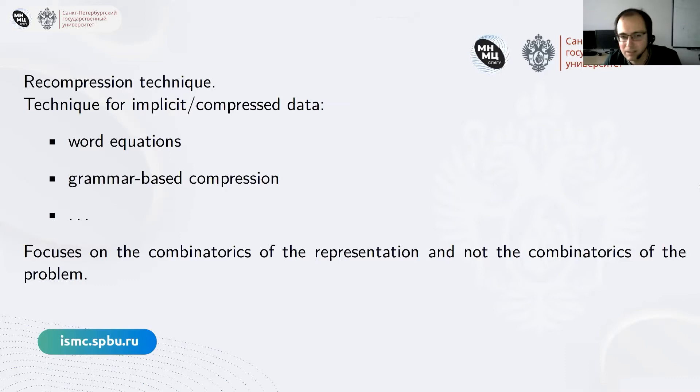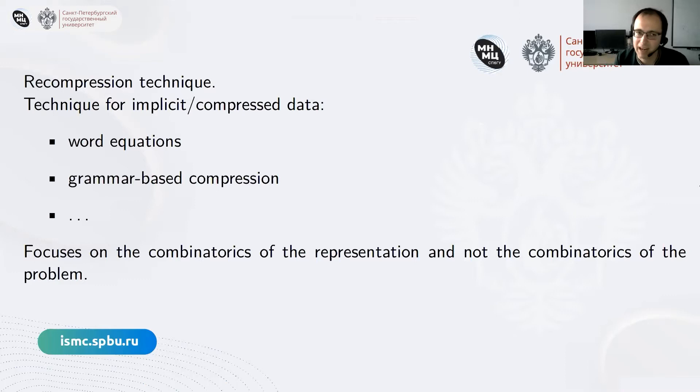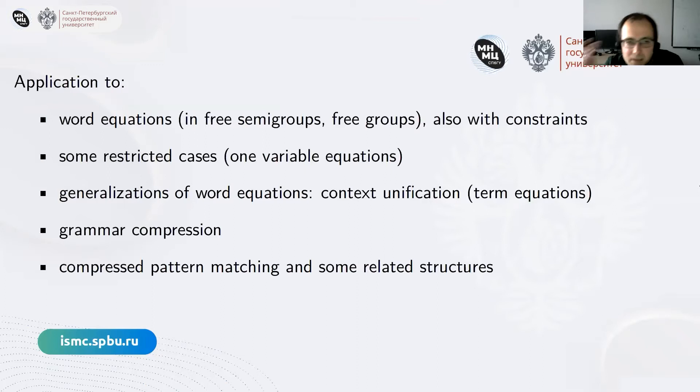What we focus on in this compression technique is not the combinatorial properties of the data itself, but rather the combinatorial properties of the way they are defined — the way those word equations are written or the way those formal grammars are defined. Not on the actual combinatorial object (words or trees), but on the way they are represented. It turns out this is quite fruitful and led to several algorithms through a unified approach.